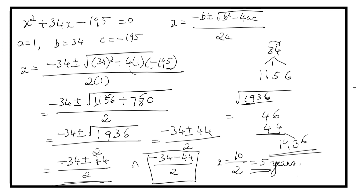19 plus 5 is 24. 15 plus 5 is 20. 20 times 24 is 480. Our answer is correct. In 5 years, the product of ages of A and B becomes 480.